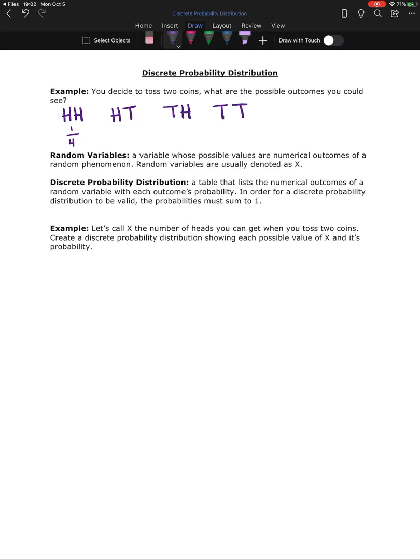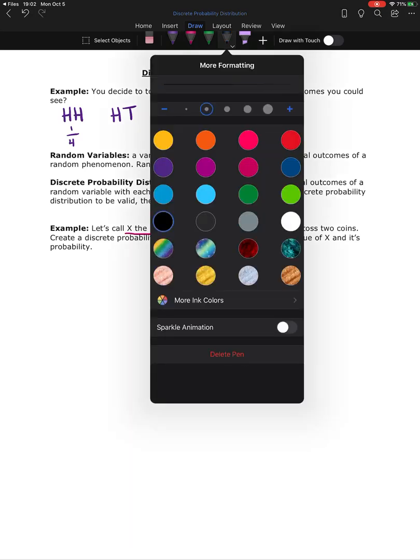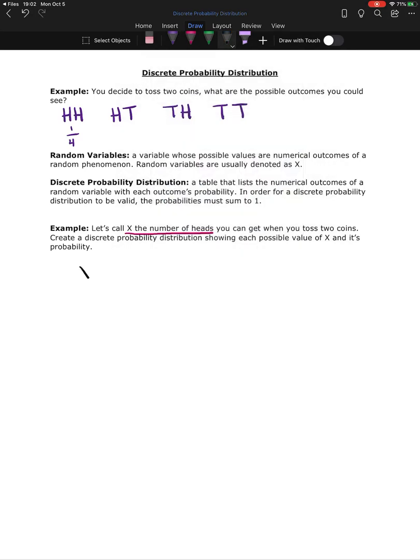So we're going to take the first example that we were looking at and we're going to create a probability distribution where X represents the number of heads you can get when you toss two coins. So I'm going to start this table by creating an X column and then a probability of X column.